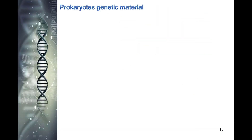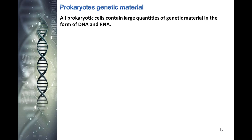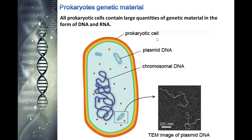All prokaryotic cells contain large quantities of genetic material in the form of DNA and RNA. Because prokaryotic cells by definition don't have a nucleus, a single large circular strand of DNA containing most of the genes needed for cell growth, survival, and reproduction is found in the cytoplasm.